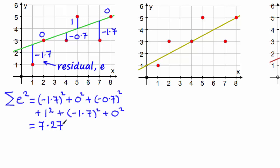So the smaller we can make this value, the closer these points are in general to the line. That will be our line of best fit.